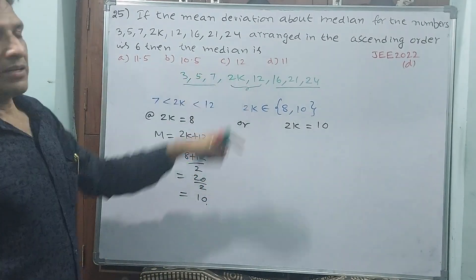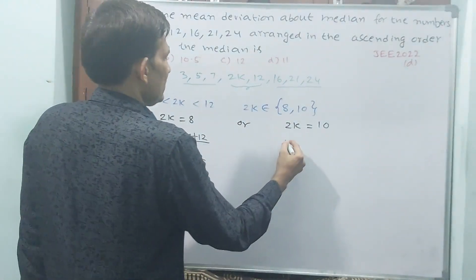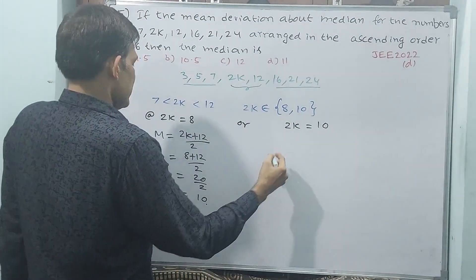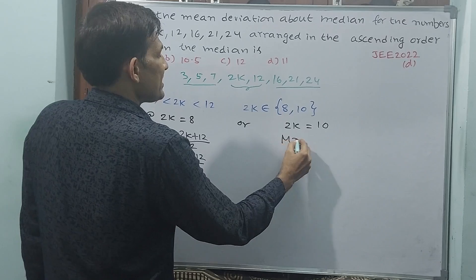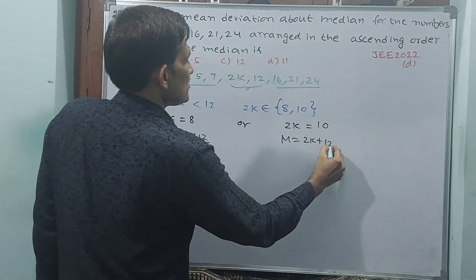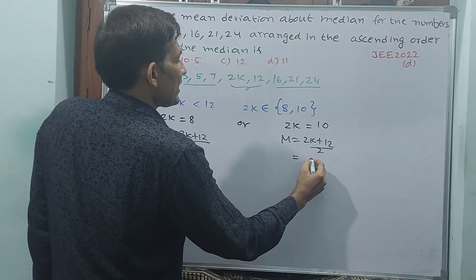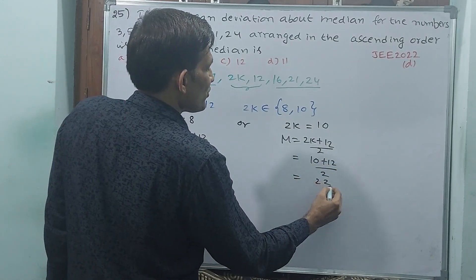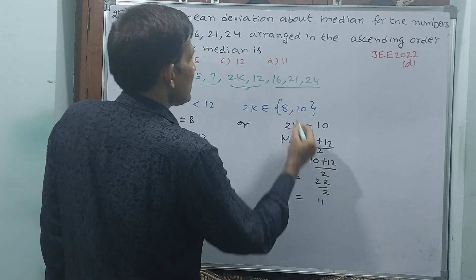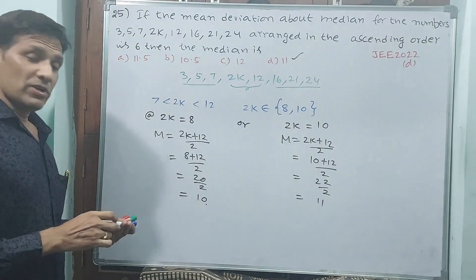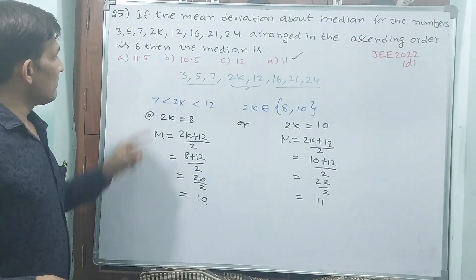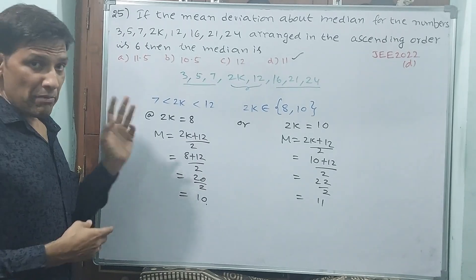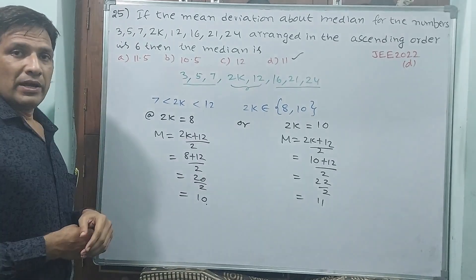If 2K is 10, then go for 11. If 2K is 10, then automatically median is equal to 2K plus 12 by 2, or else 10 plus 12 by 2, or else 22 by 2, or else 11. 11 is there, yes, 11 only the answer. Here even 0.5 in answers also matter. Let us go for next question.